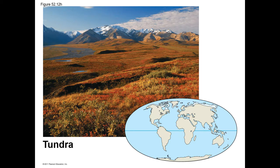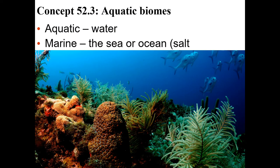Tundra typically has permafrost — permanently frozen soil. Precipitation is usually pretty low in arctic tundra, but tundra on mountaintops can actually get quite a bit of rain. The key takeaway is that precipitation and temperature are what set one terrestrial biome apart from another.